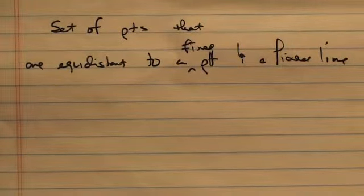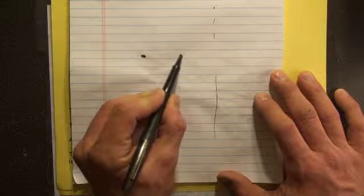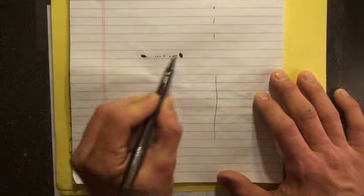What you'll have here is this. There's a fixed point. There's a fixed line. This point here is the same distance away from the fixed point as it is to the fixed line.